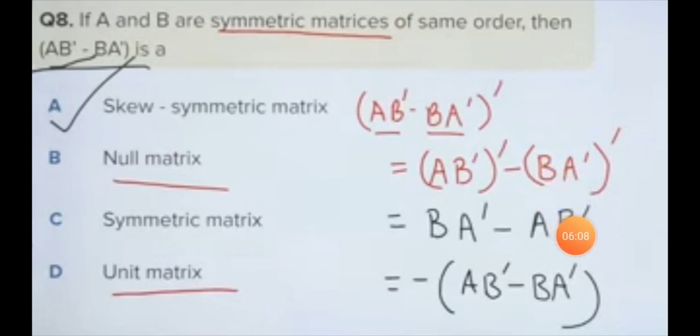This simplifies to -(AB minus BA). Taking out the negative sign gives AB - BA opposite. Since P' equals minus P, this satisfies the skew-symmetric condition. Therefore, the answer is skew-symmetric matrix.